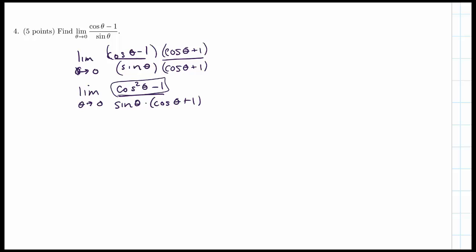All right, this is related to the Pythagorean identity, if you can see that. Here's the Pythagorean identity, that sine squared plus cosine squared is equal to one.